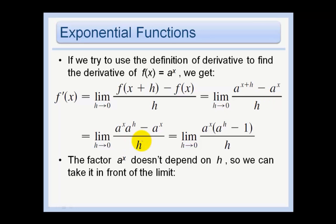Okay, so let's do that. And then we can factor out an a to the x in this step right here. Now notice that this factor a to the x actually does not depend on the h at all. So when we're finding the limit as h approaches 0, this a to the x is not impacted by that. So we can take it out in front of the limit.